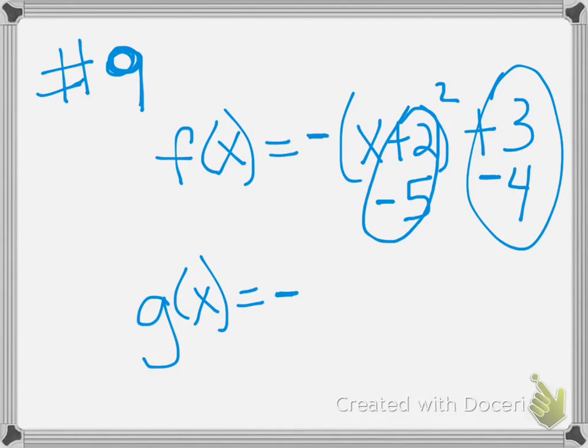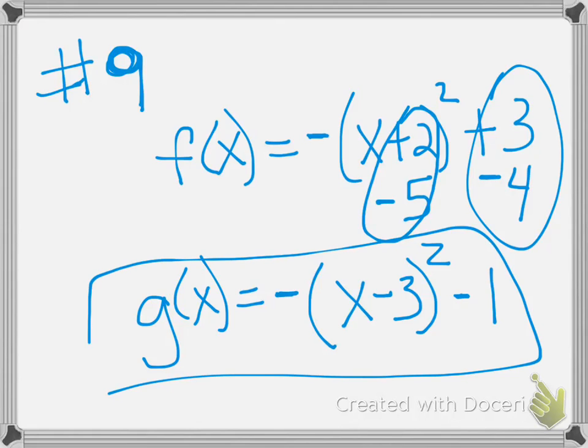So it's still going to be negative, that hasn't changed, it's still going to be x. 2 minus 5 is going to be minus 3, and 3 minus 4 is going to be negative 1. So my new equation should be negative x minus 3 squared minus 1, and that is answer choice B.